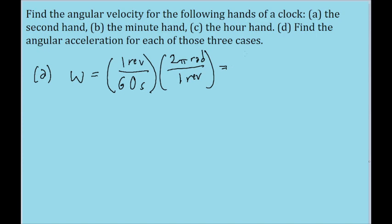...then we find an angular velocity of pi over 30 radians per second. Or if you want to write this out in a more scientific notation kind of way, then that would be 1.05 times 10 to the power of negative 1 radians per second. And that's the angular velocity of the second hand.